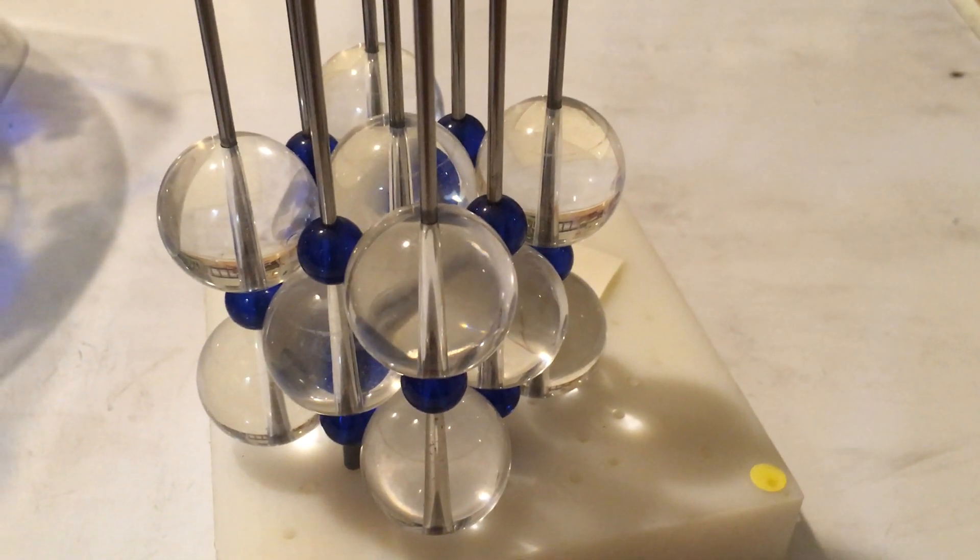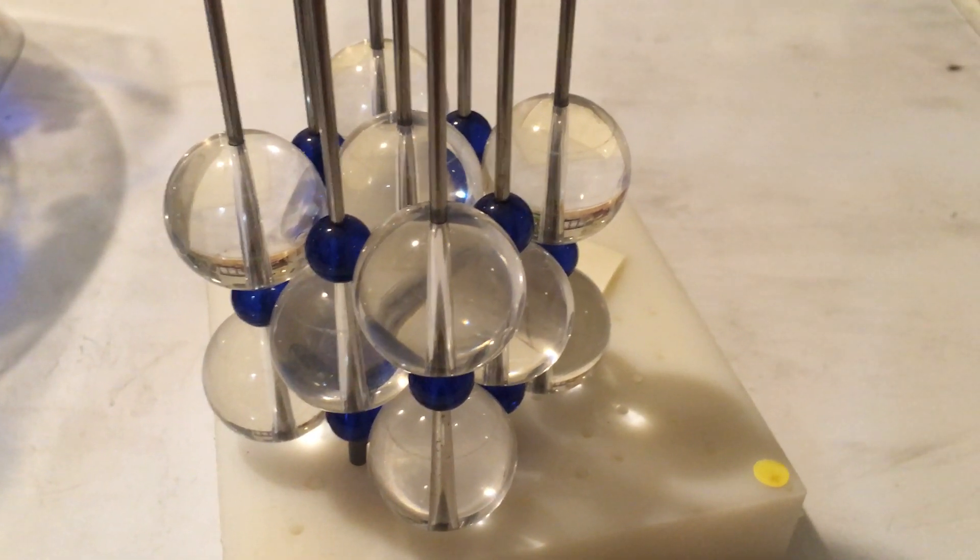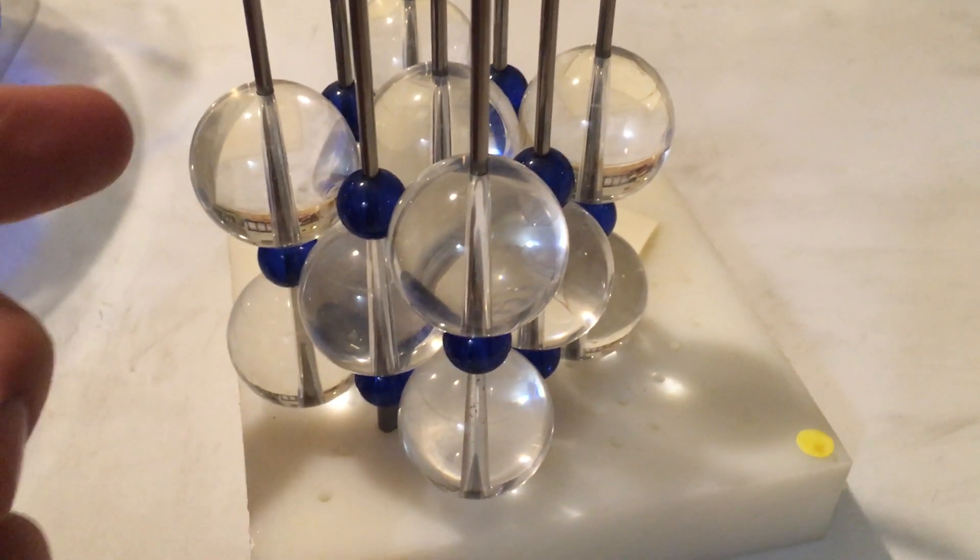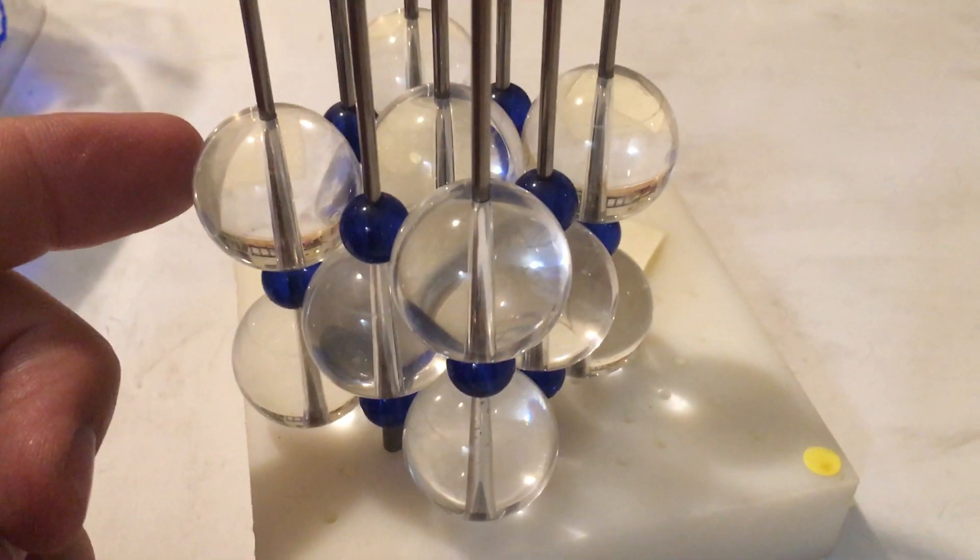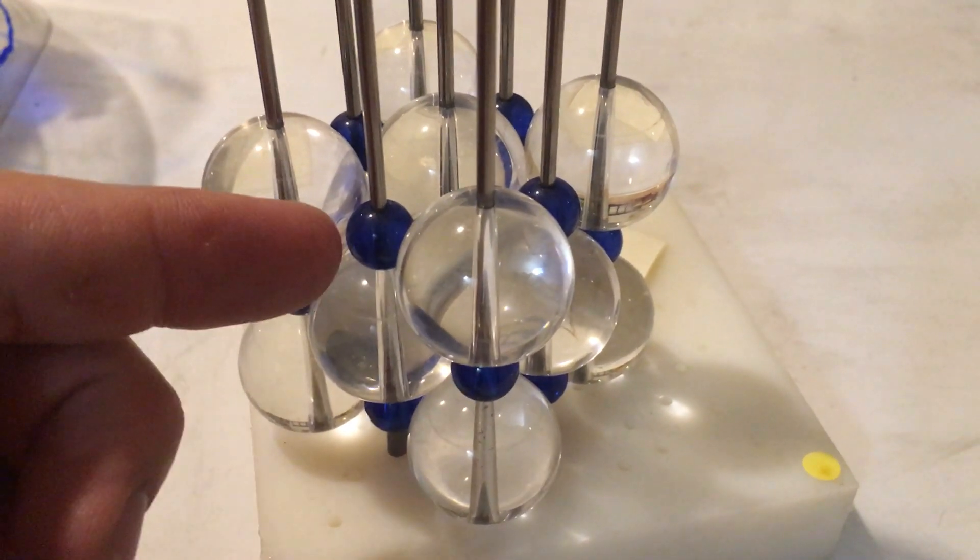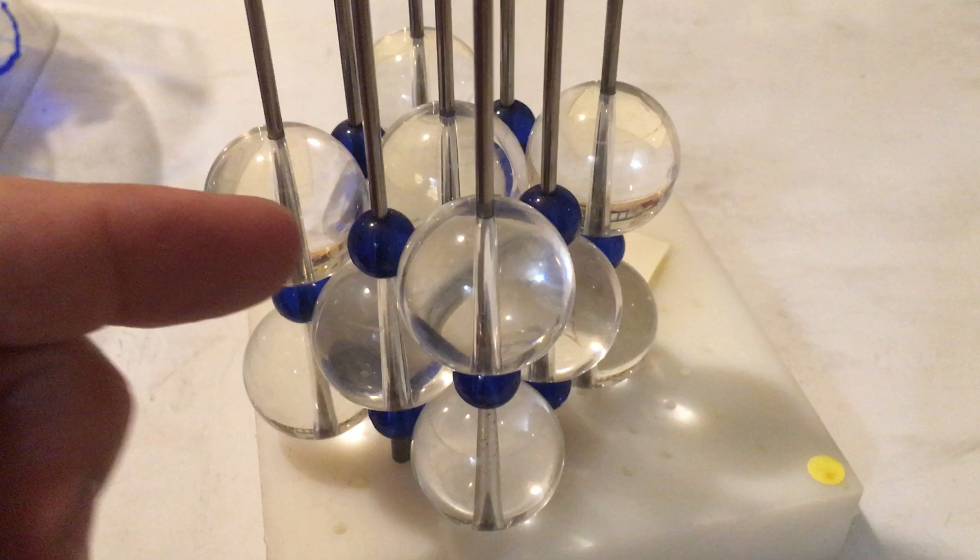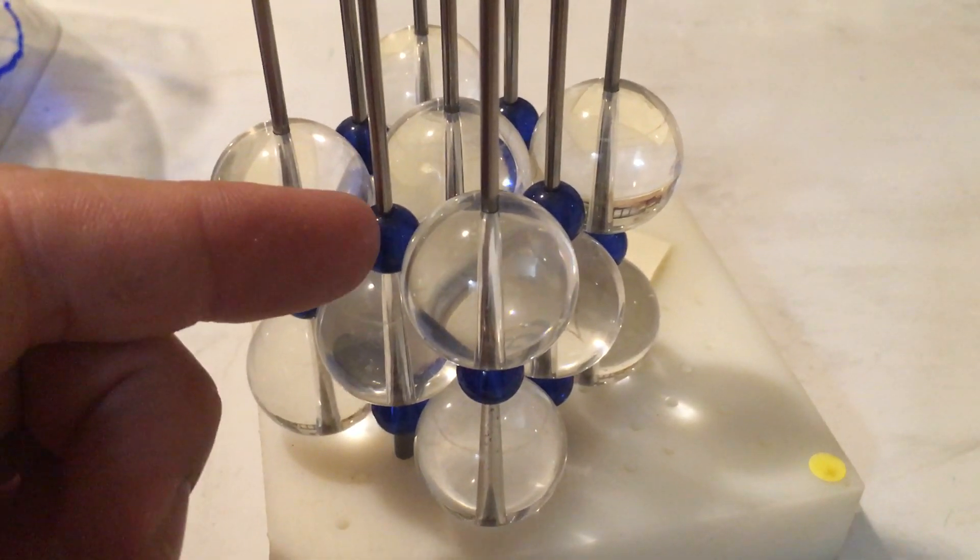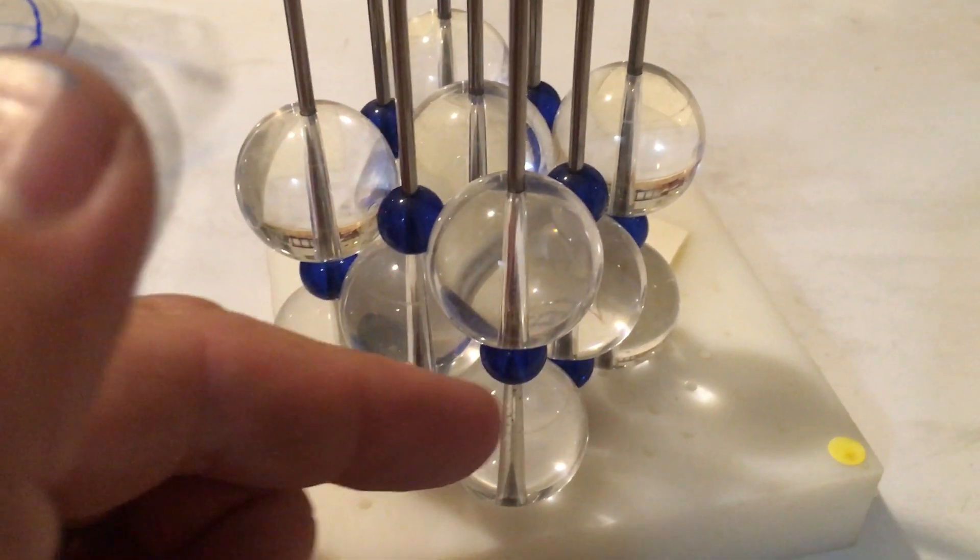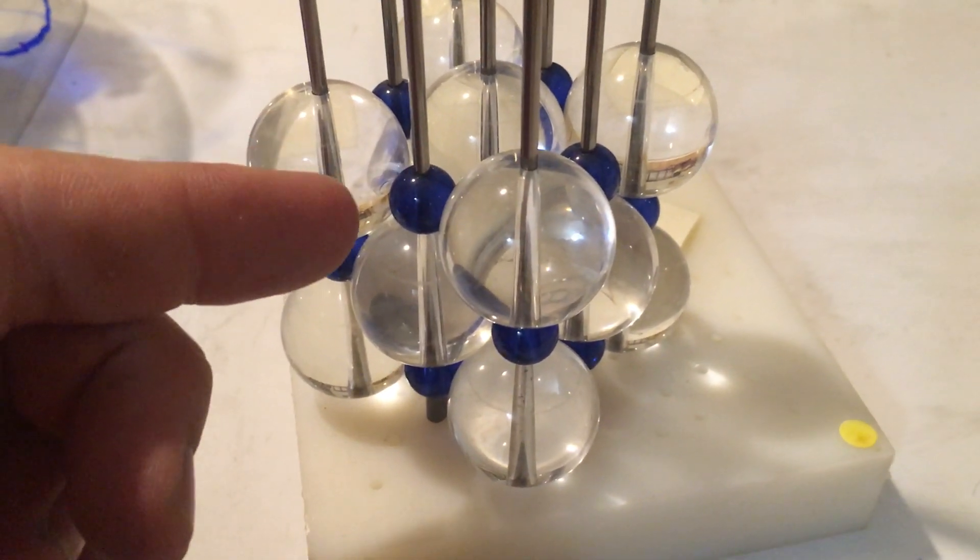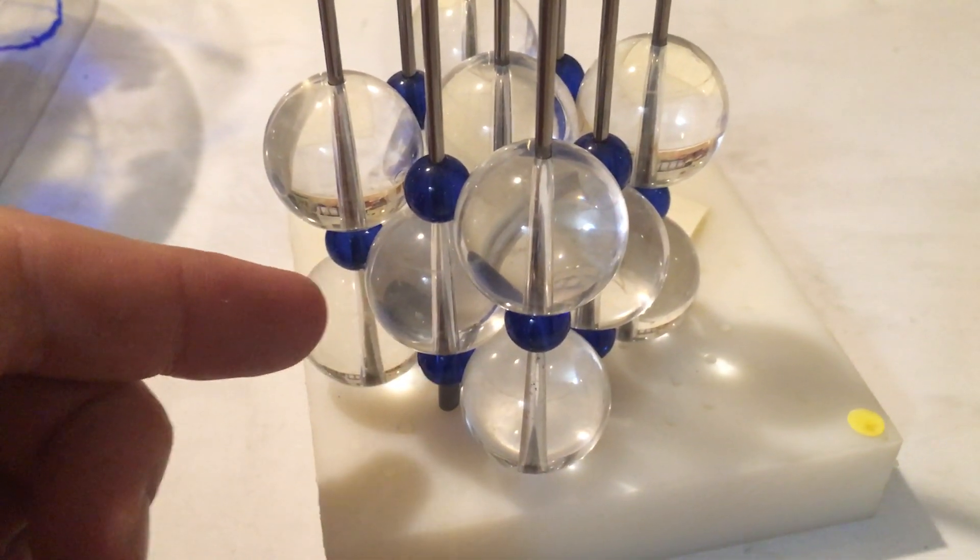What we have here is a structure of sodium chloride, also known as a rock salt structure. The colorless large spheres represent chloride ions. The blue small spheres represent sodium ions. And what you can see is the cations are nestled in octahedral holes inside of a face-centered cubic lattice of anions.